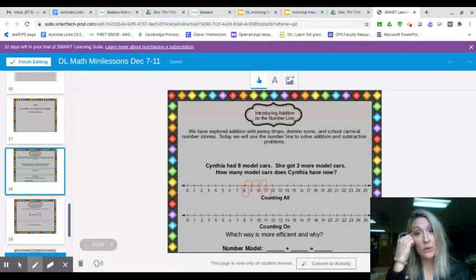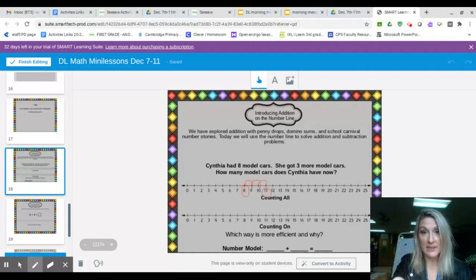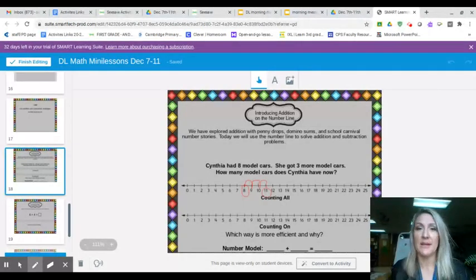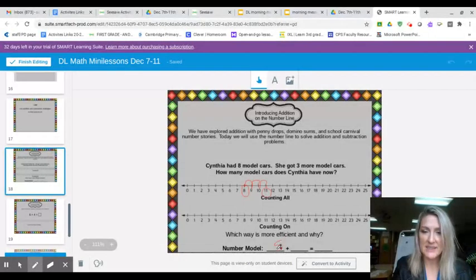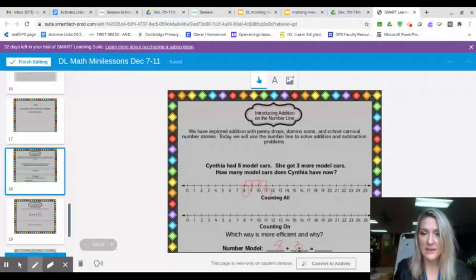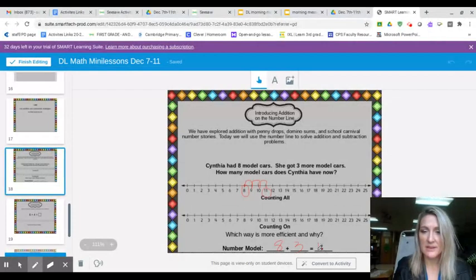Your goal is to get it from a number line to your brain without needing the number line, but we're going to start here because that's what's going to help you become more fluent with your adding. Let's try another one. Well, what would the number - let's talk about the number sentence though. We would say eight plus three equals eleven.